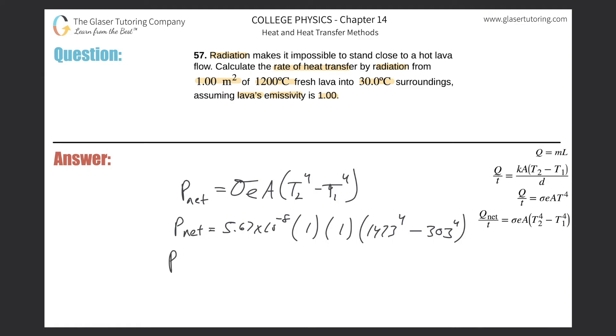And voila, all we need to do is calculate: 5.67 × 10⁻⁸ times (1473⁴ - 303⁴). Hopefully that calculated—I missed the parenthesis but this answer sounds reasonable. This works out to be about 2.66 × 10⁵, and that is in watts. So that's a large amount of heat being transferred per second.